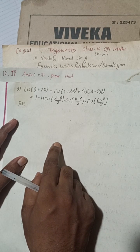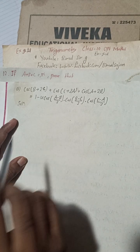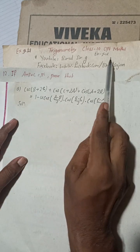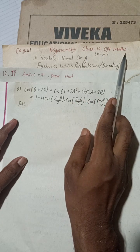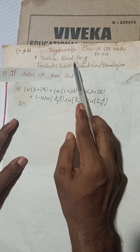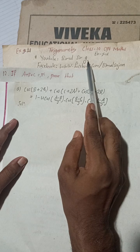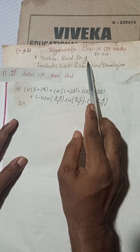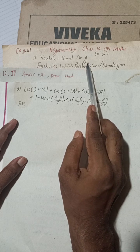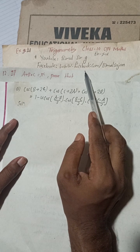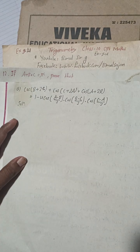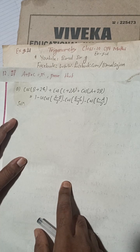Hi everybody, welcome back to Bimal Sarji's YouTube channel. This is question number 12a of Exercise 9.4, Trigonometry, Class 10 Optional Mathematics. For Class 9 and 10 students, in this channel you will get most of your mathematics — compulsory as well as optional math solutions. Class 12 solutions are also available; you can check the playlist. Follow me on Facebook and subscribe to the channel for more.